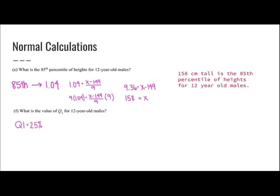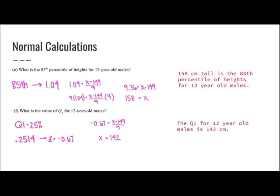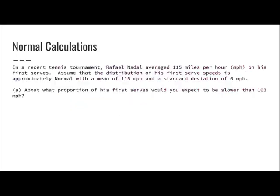Now I'll find the value of Q1. Remember, Q1 is the 25th percentile. I look for the number closest to 25% in the table, and the Z-score for that is negative 0.67. Solving for X gives 142 centimeters. So Q1 for 12-year-old males is 142 centimeters.